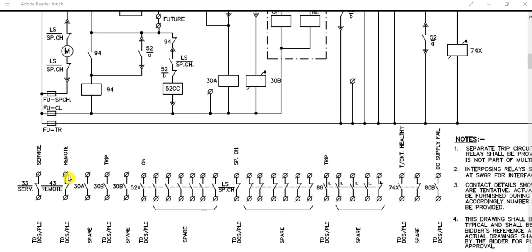Only when the remote position is selected can you issue a trip or close command to the switchgear to close or trip the circuit breaker. So it is very important to select the control switch position to remote — this is the feedback to DCS or PLC.